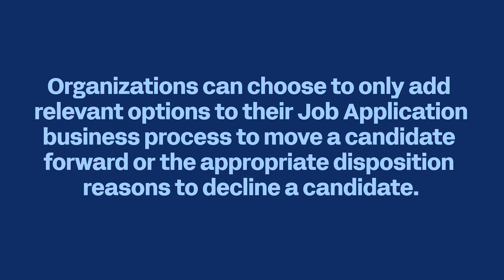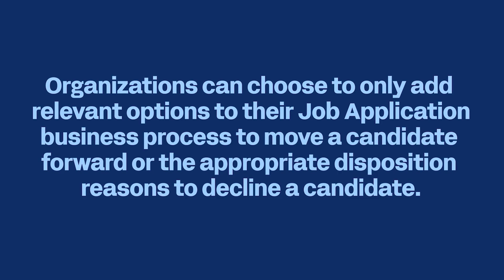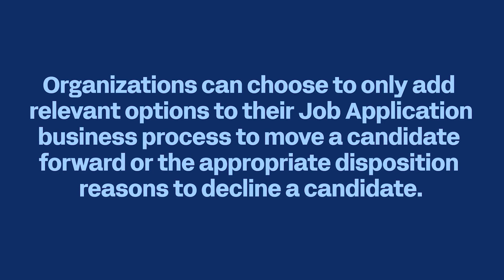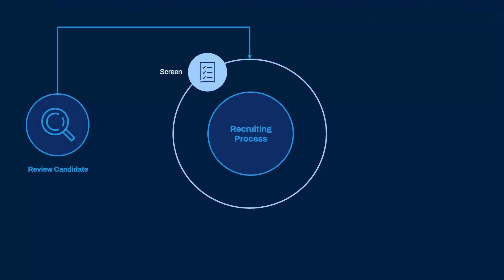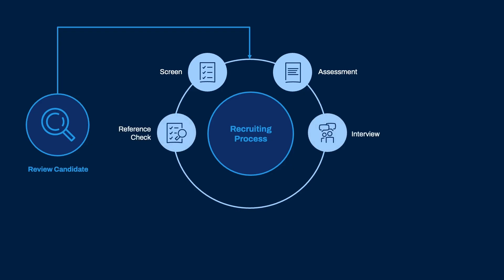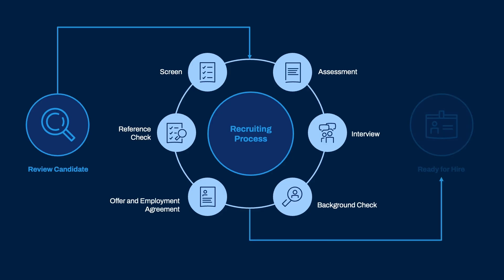Organizations can choose to only add relevant options to their job application business process to move a candidate forward, or the appropriate disposition reasons to decline a candidate. The job application business process might include steps like review candidate, screen, assess candidate, interview, reference check, background check, offer and employment agreement, and ready for hire.